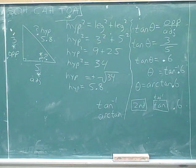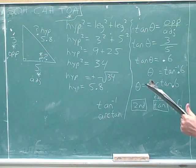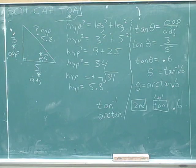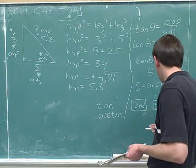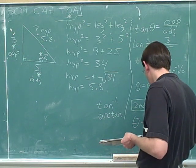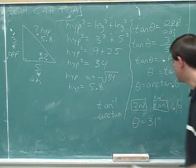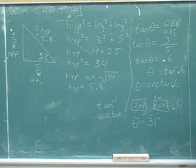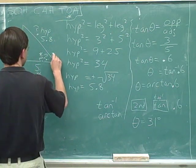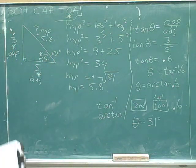On the calculator, the inverse tangent of 0.6 is approximately 31 degrees — rounding off. So this little angle is 31 degrees.